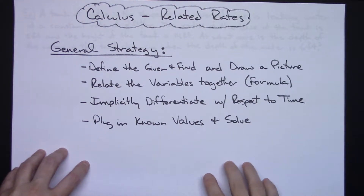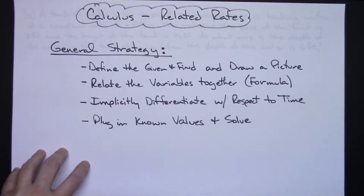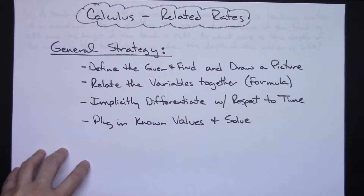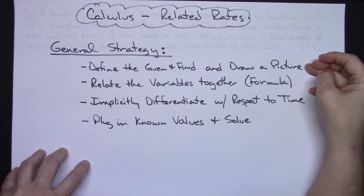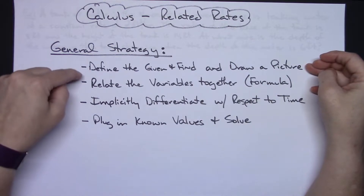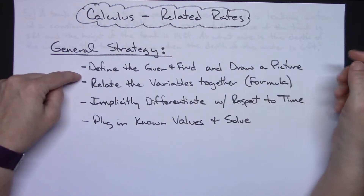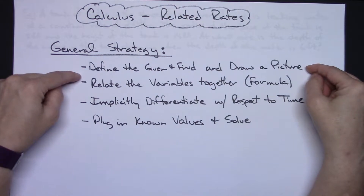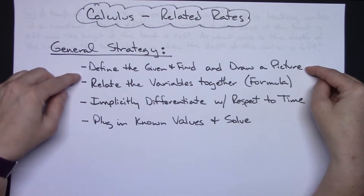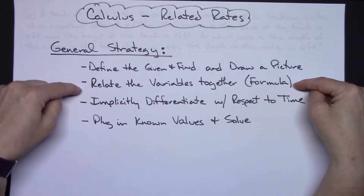In this video I'm going to work out one related rates example and here I'm just going to start with a general strategy of what you ought to do when you approach a related rates problem. First off you're going to need to read the problem and define the given and what you're asked to find, as well as probably drawing a picture — that's going to be a very helpful thing to do. You're then going to need to relate the variables that you have together, generally in some type of formula.